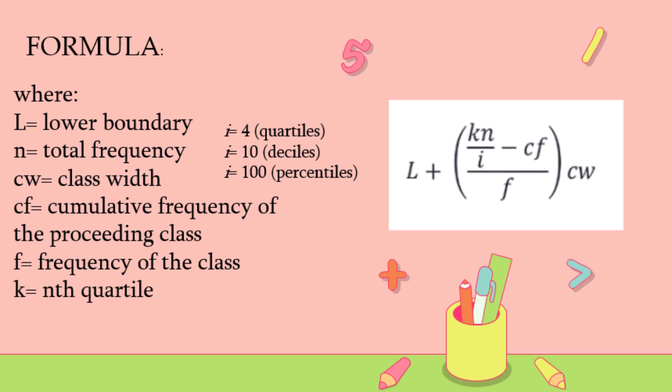cf for cumulative frequency of the preceding class, f for frequency of the class, and k for nth quartile. So i is 4 if the unknown is quartile, 10 if the unknown is deciles, and 100 if the unknown is percentile. This is the formula we have, and we're going to add kn over i minus cf all over frequency times the class width.